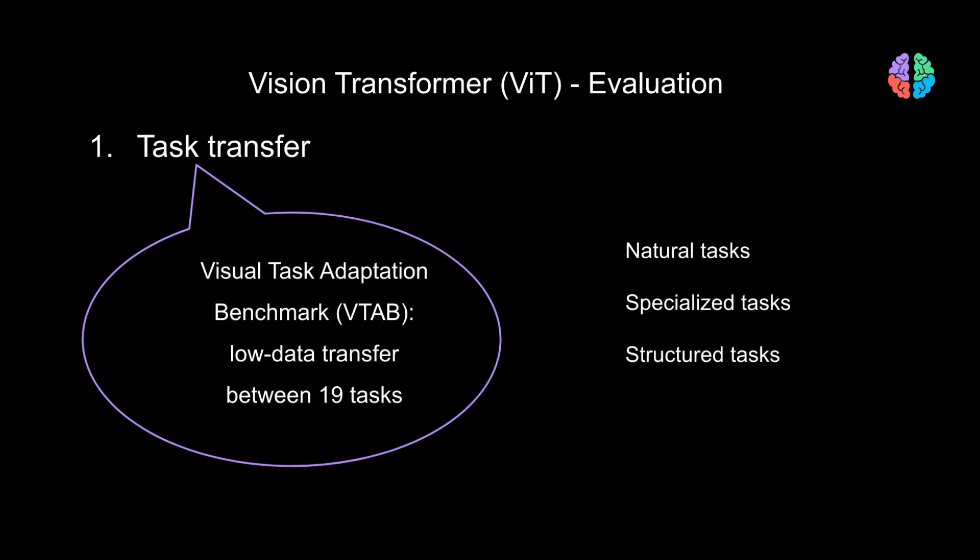The second way ViT is evaluated is on the Visual Task Adaptation Benchmark (VTAB). This dataset is driven by the fact that knowledge should be transferable across tasks — for example, if the first task is to classify dogs and cats and the second is to classify elephants and horses, you should be able to transfer knowledge across these two tasks. This dataset has 19 tasks grouped into natural, specialized, and structured categories.